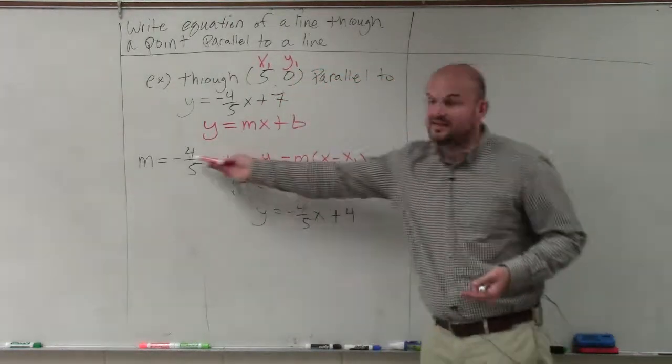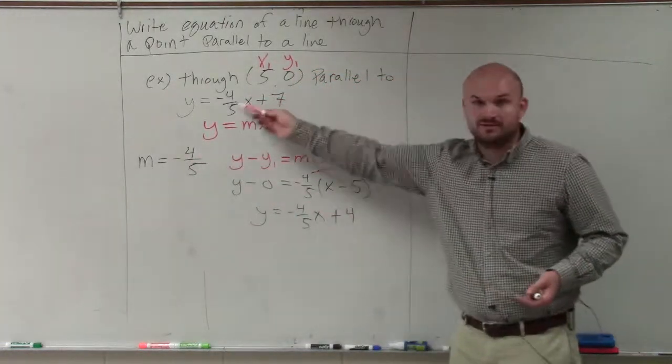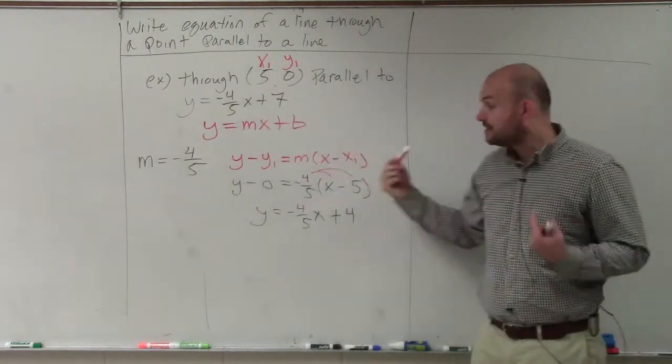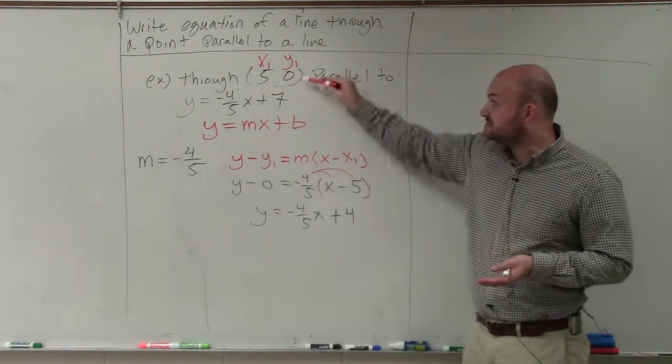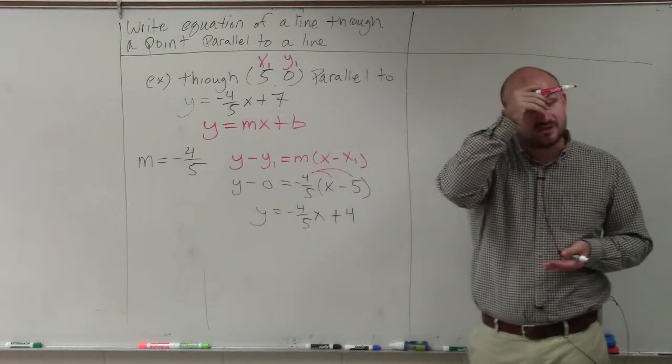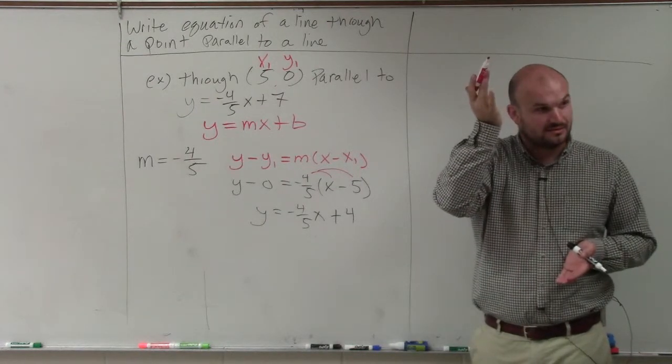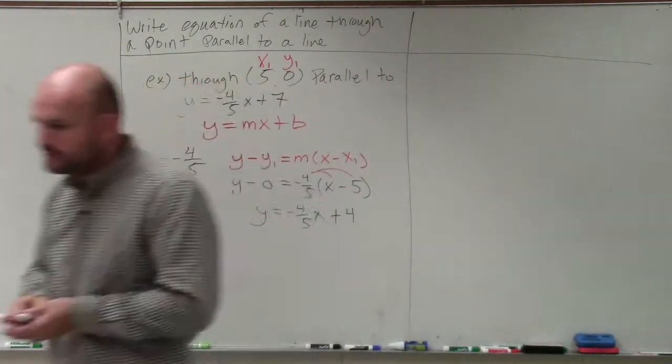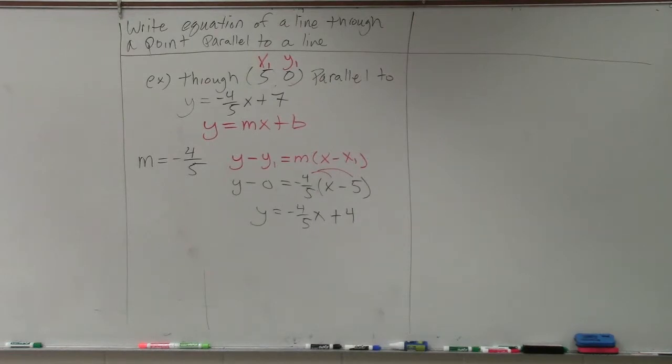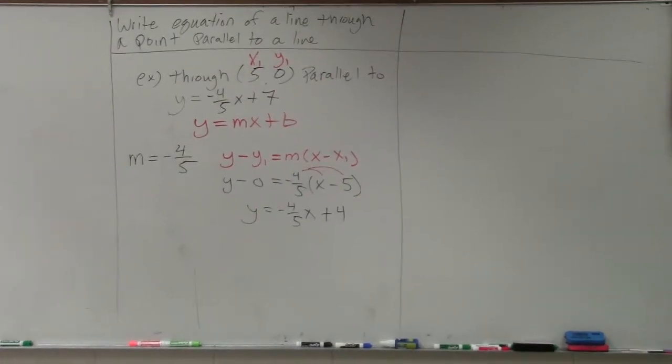We can check our answer. The slope had to be the same, right? Do you guys agree these are the same slopes? But the y-intercepts are different because this line had to go through the point (5, 0). Does that make sense? Just remember, when you're doing a problem like this with parallel lines, you're going to use the exact same slope.